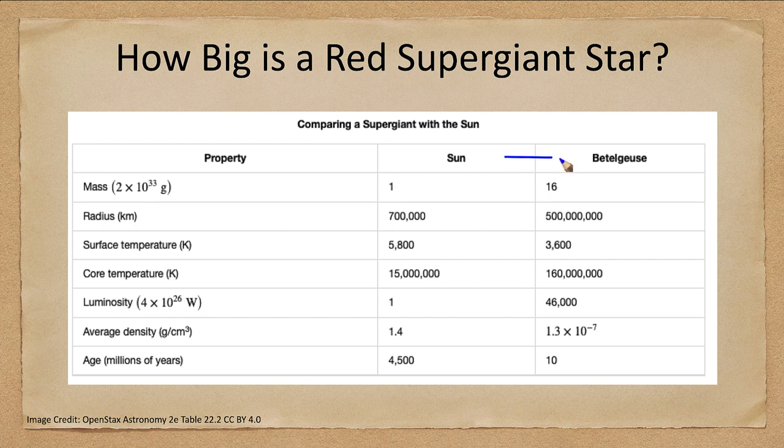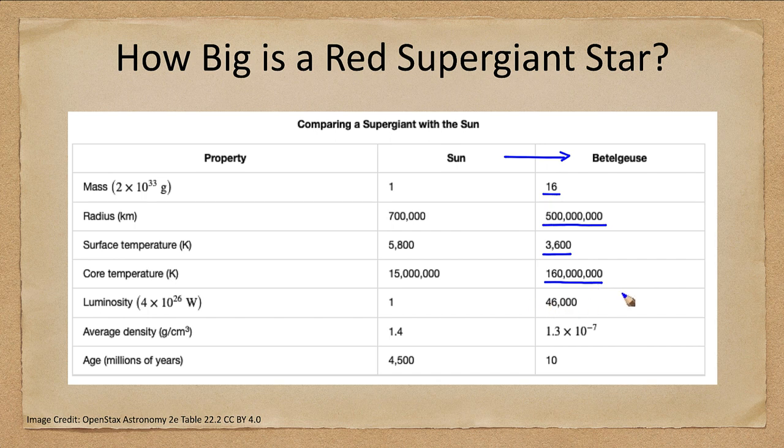How big do they become? Well let's look at some examples here between the Sun and the red supergiant Betelgeuse. Betelgeuse is only about 16 times more massive, however in terms of size it's nearly a thousand times larger than the Sun. Temperature is a little bit lower, core temperature many times higher - so 10 times higher in the core, 160 million Kelvin. Its luminosity 46 thousand times larger than our Sun's, but its density is next to nothing. All the material is compacted to the core.